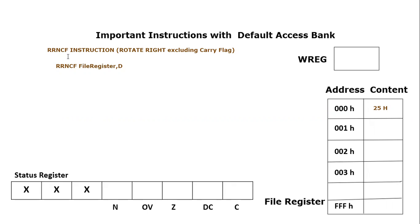NCF means 'not through carry', meaning we have to exclude the carry flag. In the last tutorial we covered RRCF, which includes the carry flag. We have already discussed that instruction, so we are going to repeat the example but with the instruction RRNCF, meaning we will not include the carry flag.